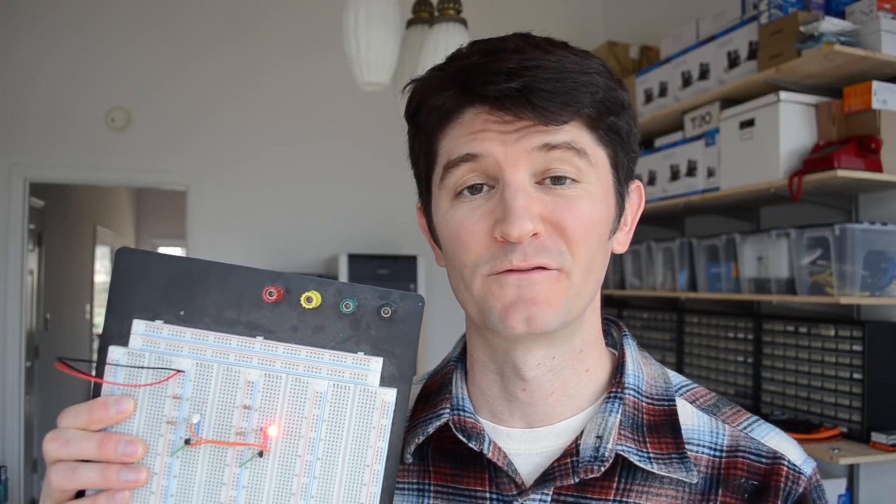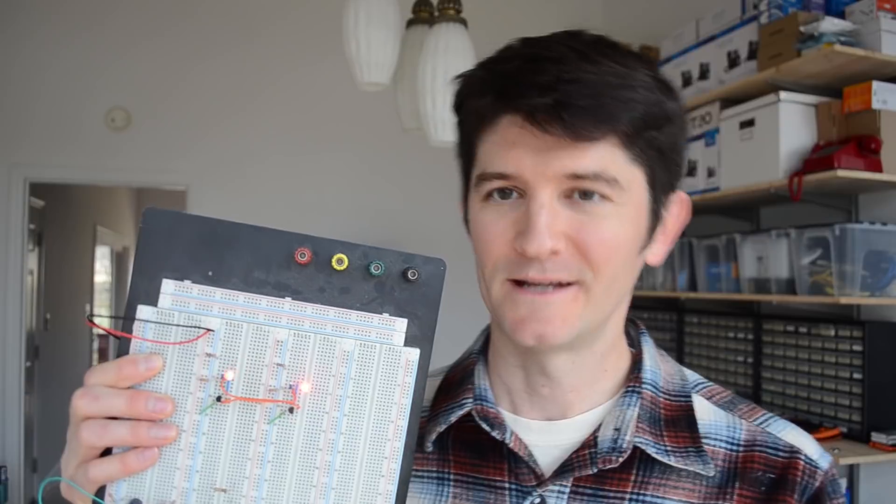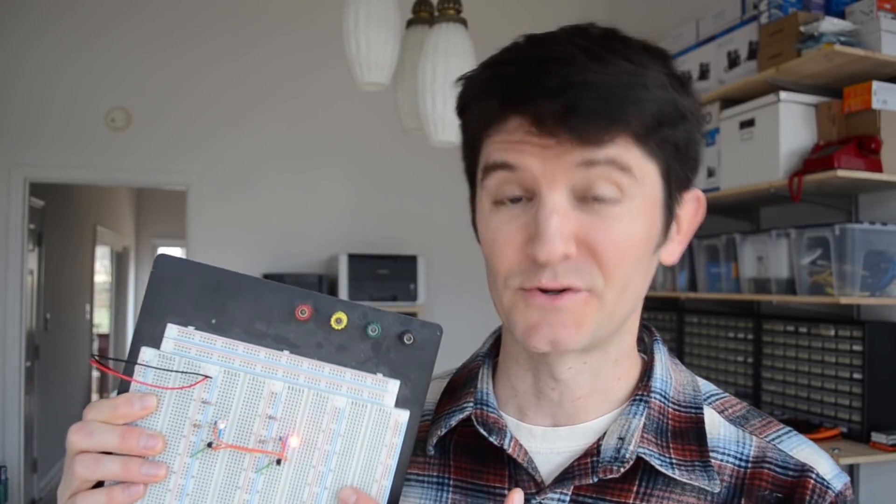Now, we've talked about A-stable multi-vibrators before. Usually, we talked about them in the context of a triple-five timer, but in this circuit, there is no triple-five timer. There is no IC. There is no oscillator whatsoever. It's just a resistor, some capacitors, and a couple of transistors.